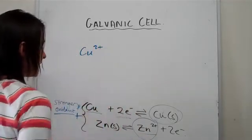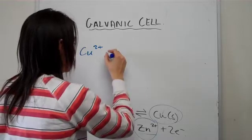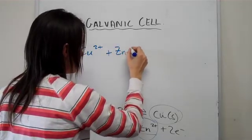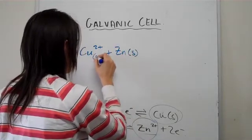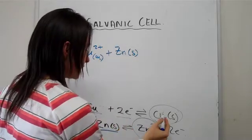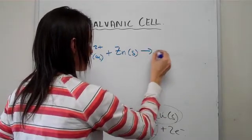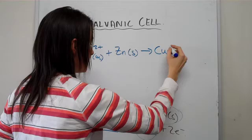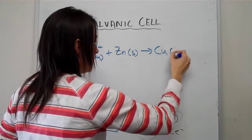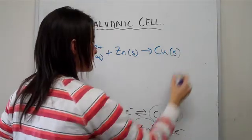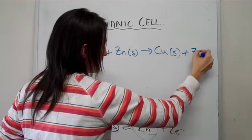copper two plus together with zinc is going to produce copper solid. Notice how you no longer need double equations like back and forth, and it's going to produce zinc two plus. That is your overall reaction.